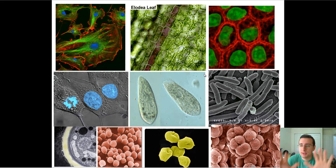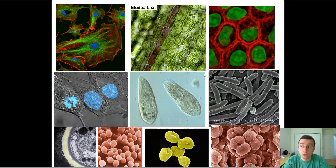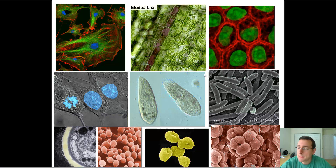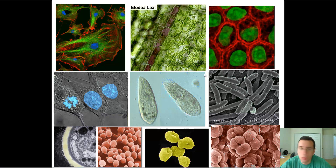In the last video, we talked about the seven characteristics of life, and one of those characteristics was order. Life tries to maintain order. What do you see in this picture? I see the most basic example of living order — there are cells.